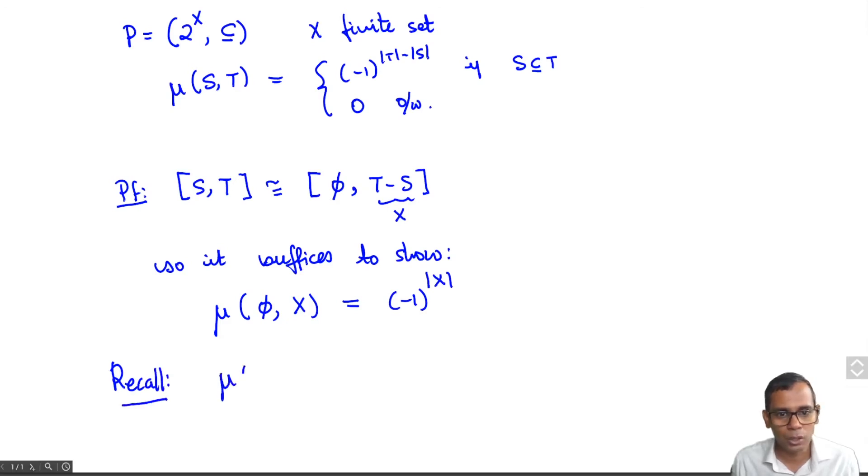So it says that mu(phi, X) equals minus the summation over all subsets Y that lie strictly in the interval, which strictly contain the empty set and are strictly contained in X. So all subsets in the interval except X: mu(phi, Y). We will induct on the cardinality of X.